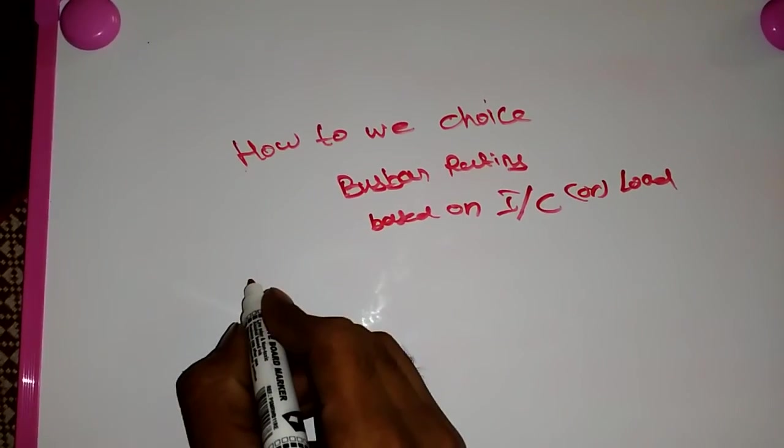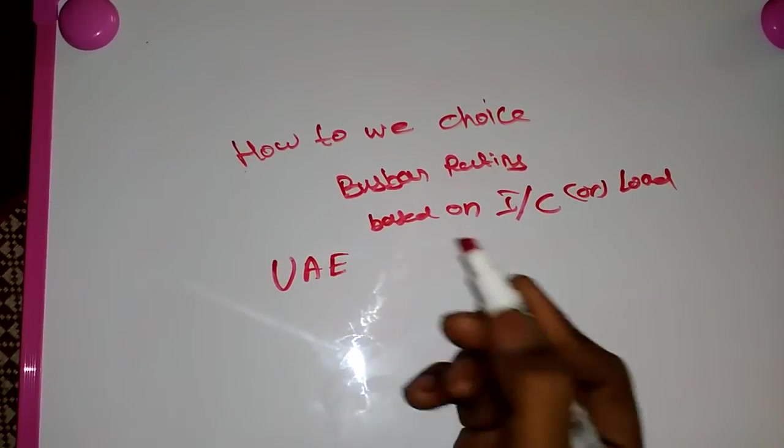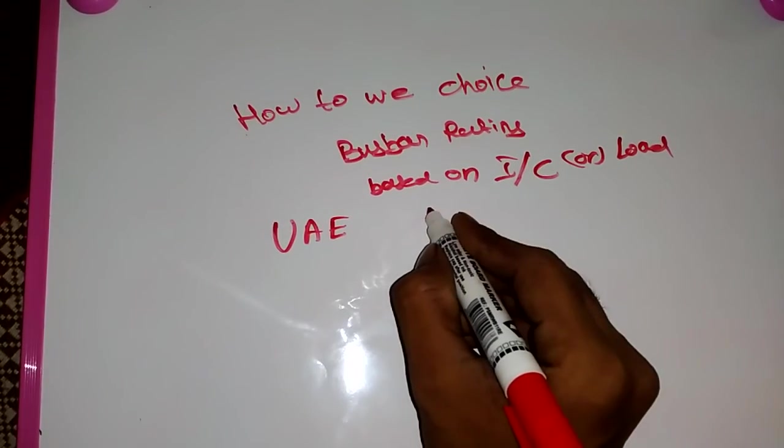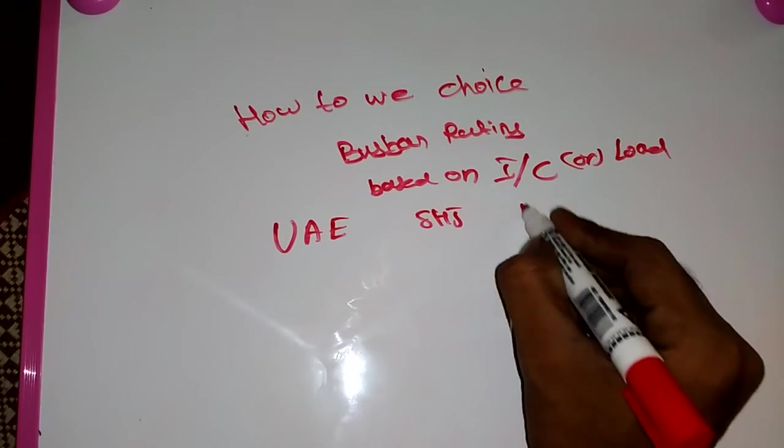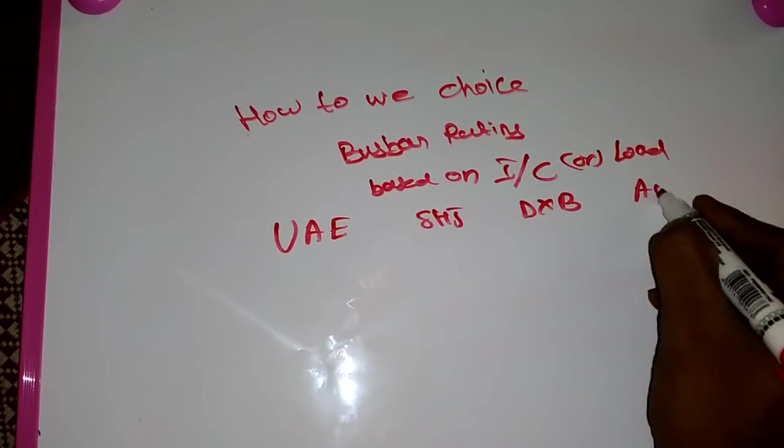We are going to see based on UAE. We have three separations from the UAE, that means Sharjah, then Dubai, then Abu Dhabi.